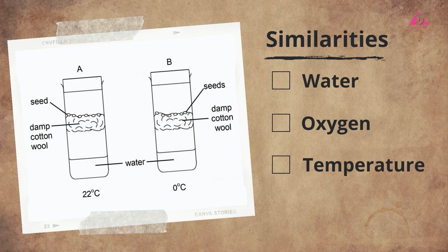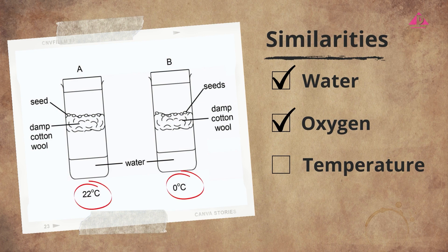Let's look at tubes A and B first. There is damp cotton wool in both setups A and B, which means that water is available to the seeds. As neither setup A nor B contain any oxygen-absorbing substances, the seeds are in an aerobic environment. The only difference between setups A and B is the temperature. By comparing the results of A and B, we can find out whether temperature is a factor affecting seed germination.